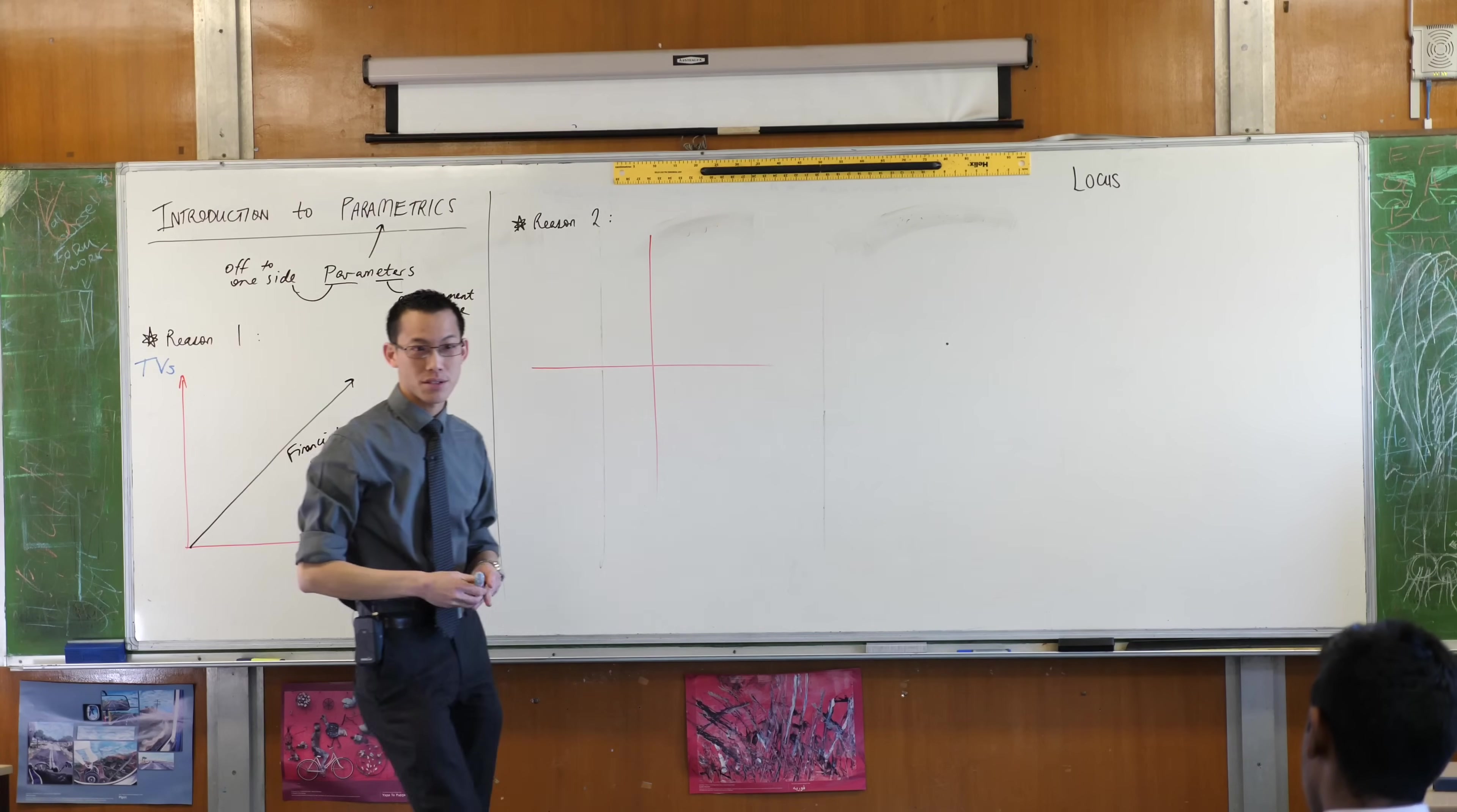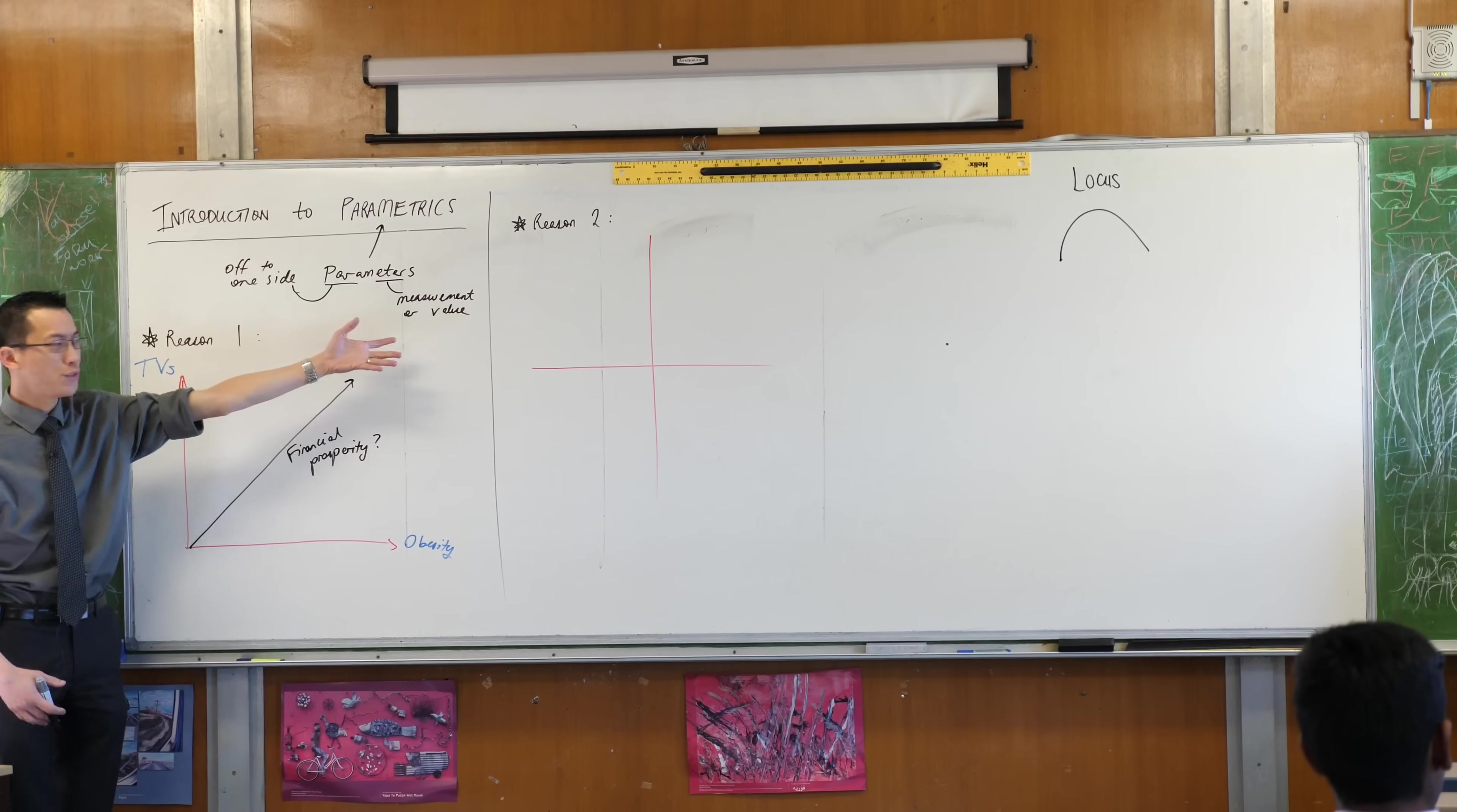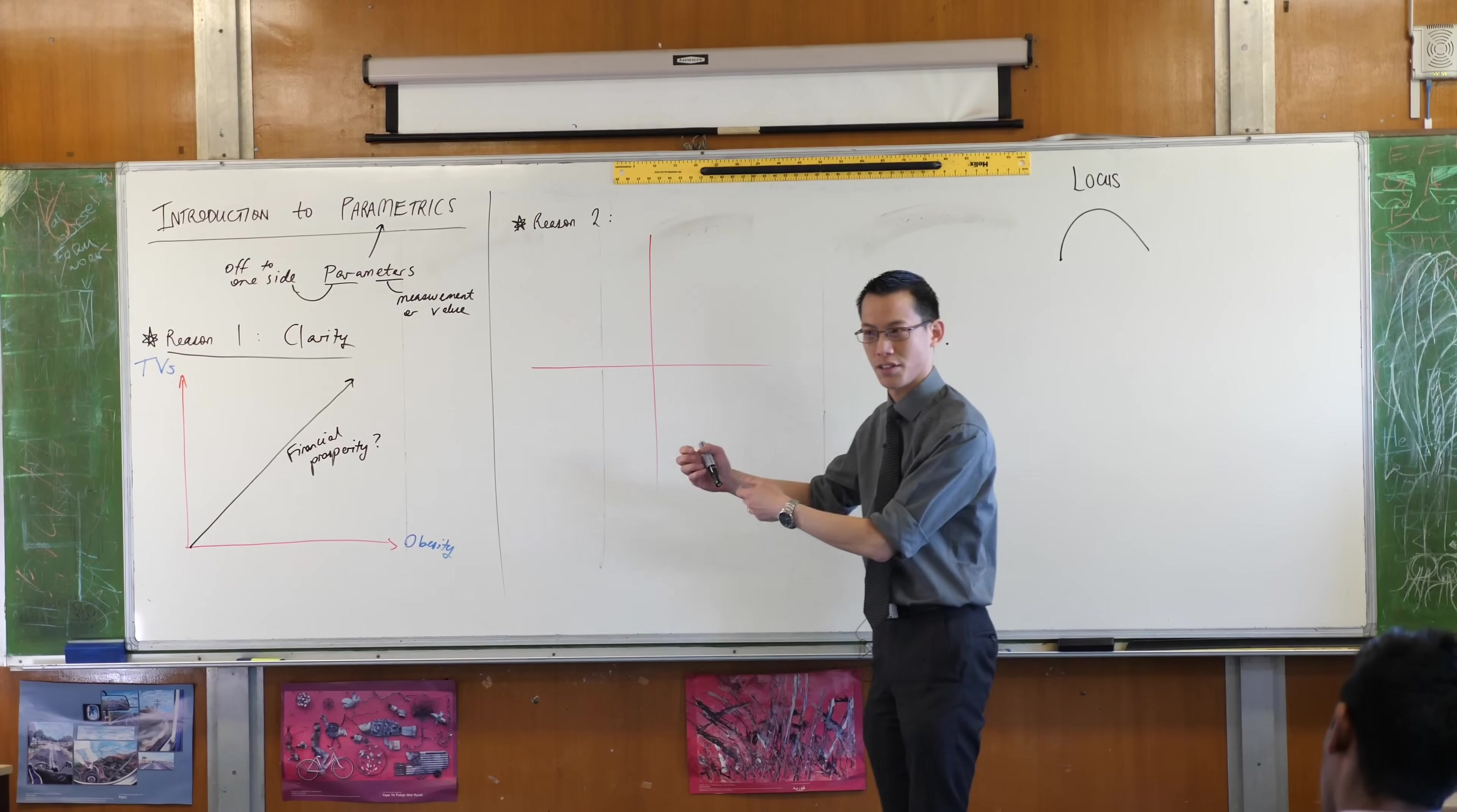Para literally means off to one side. There are paramedics, paramedics are people who work alongside all the other medical professionals. You have a parabola, a parabola is the shape when you throw something off to one side. Anytime you see the word para like paralegal, it's just when you've got something and something else over on the side. A parameter is a measurement or a value that's off to one side or hidden. So the first reason why we talk about parameters is for the sake of clarity. We want to clarify what is really going on in this situation, is this some kind of value that is really driving what's going on.